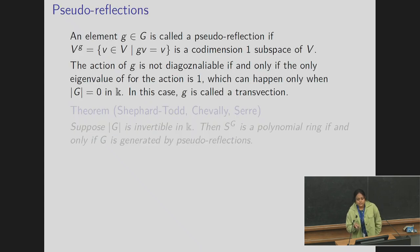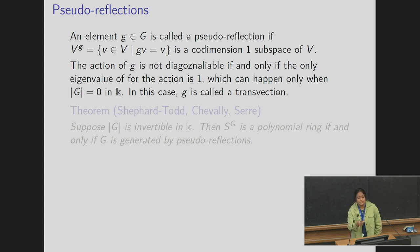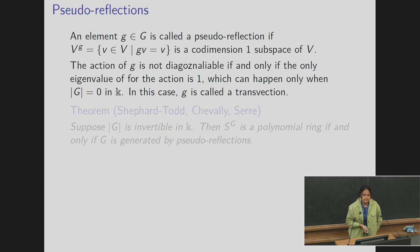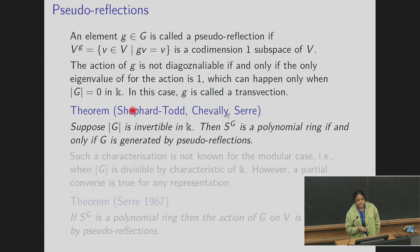To answer this question, we introduce a kind of element called a pseudo reflection: an element g in G is called a pseudo reflection if it fixes a codimension-one subspace of V. A pseudo reflection always has 1 as an eigenvalue; suppose its other eigenvalue is λ. The action is not diagonalizable if and only if this other eigenvalue is also 1, which can happen only when the order of G is 0 in K — that is, K has positive characteristic and that characteristic divides the order of the group — and in this case g is called a transvection.